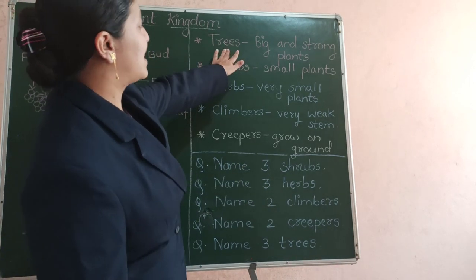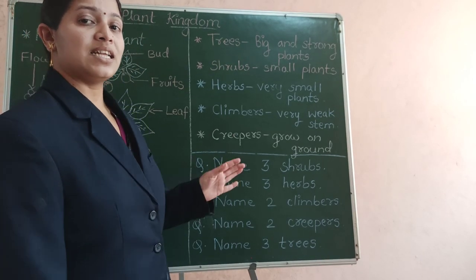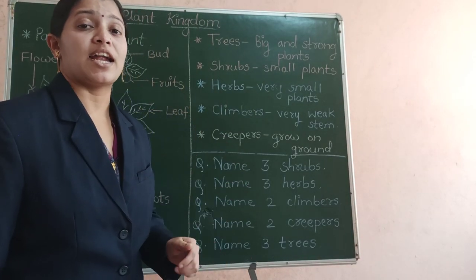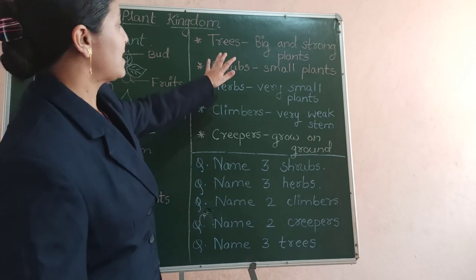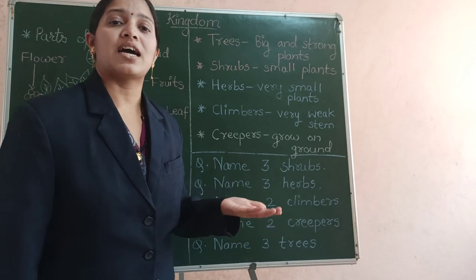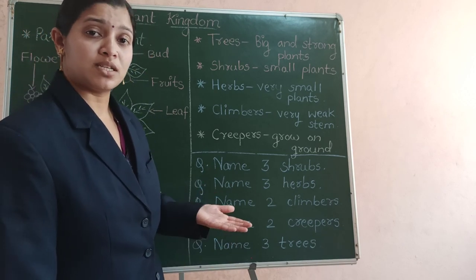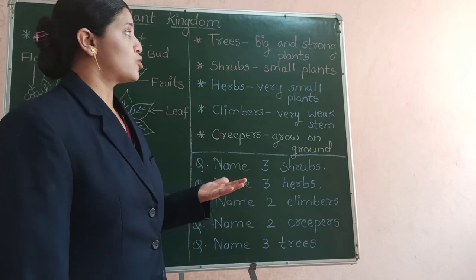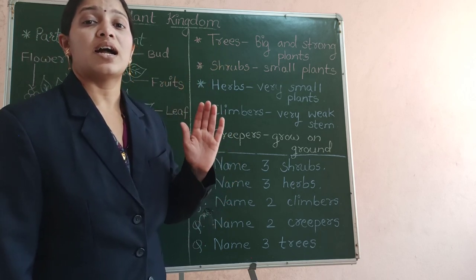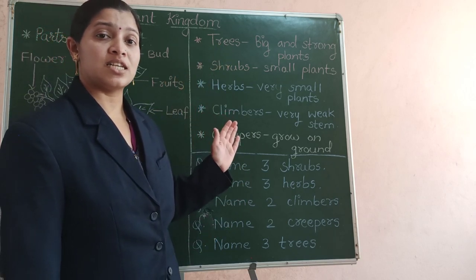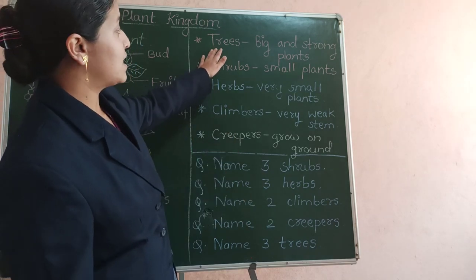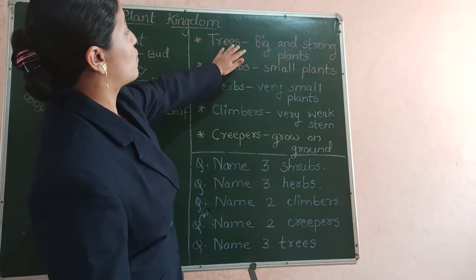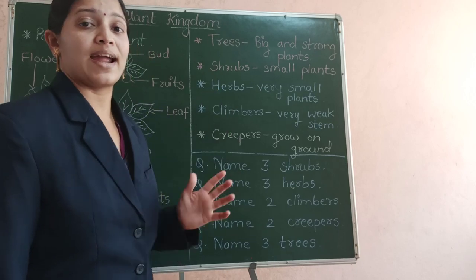The first type is trees. Trees are big and strong plants. Examples for trees are coconut tree, banyan tree, neem tree, jackfruit tree and mango tree. The life of these trees is very long — they can live for 100 years. The stem of these trees is very very strong and thick.